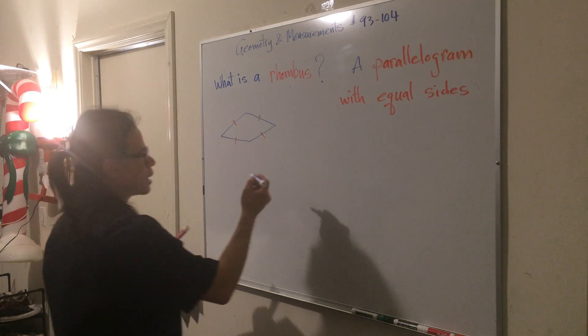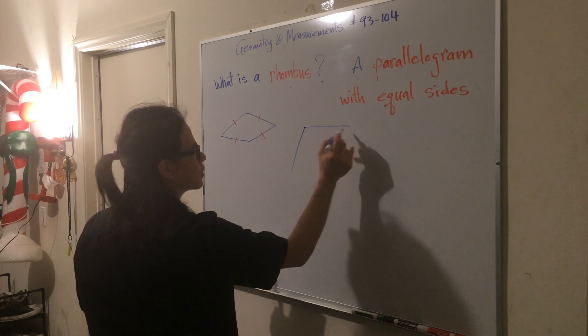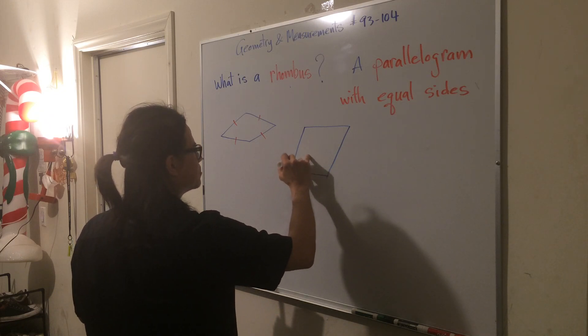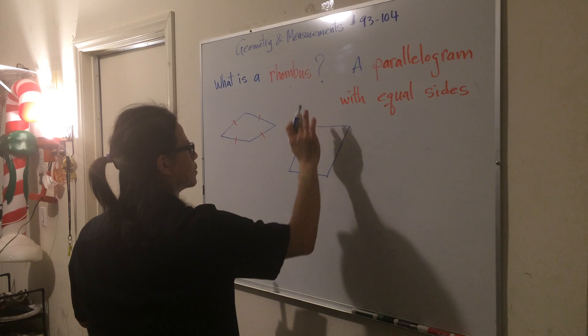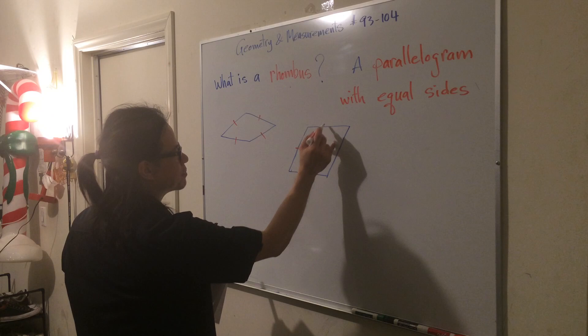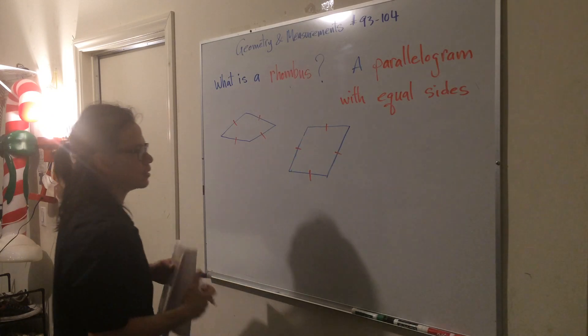The one that you're probably more familiar with is the one that looks like this. This is what most people see as a rhombus. So this side is the same as this side, which is the same as this side, and that's the same as this side.